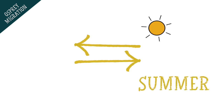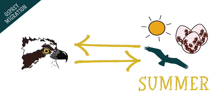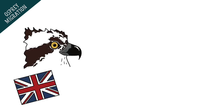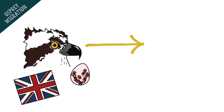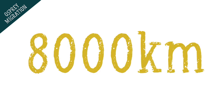Ospreys make this journey twice every year in order to move between their summer homes where they breed and raise chicks, and tropical regions where they spend their winter. As we've learned before, ospreys that come to the UK to breed most often spend their winters in West Africa in countries such as the Gambia or Senegal. On average these journeys add up to over 8,000 kilometres per year.